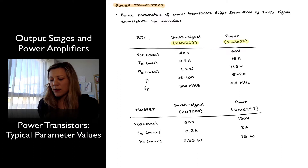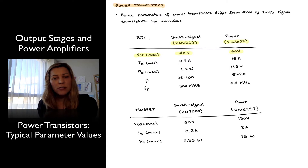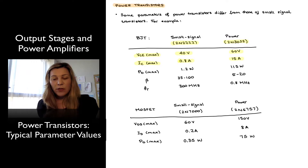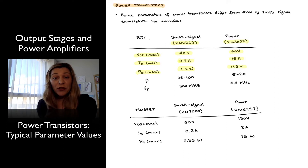If we look at the datasheet, we will see in the absolute maximum table that the maximum VCE listed for the small signal transistor is 40 volts, whereas for the 2N3055 it is 60 volts — actually towards the lower end of the range for a power transistor, as they can be several hundreds of volts sometimes. The maximum collector current is listed as 800 milliamps for the small signal transistor versus 15 amps for the power transistor — a huge difference. Maximum power dissipation is 1.2 watts for the small signal transistor versus 115 watts for the power transistor, which is pretty high even for a power transistor.